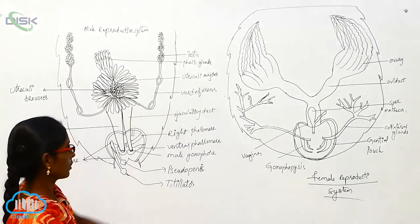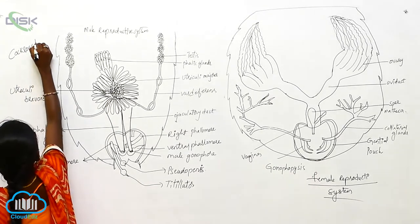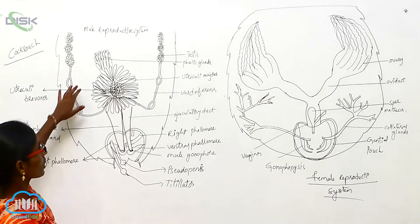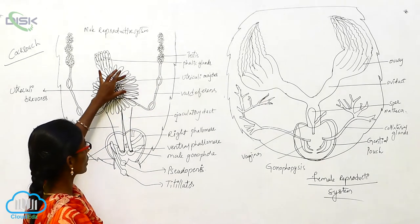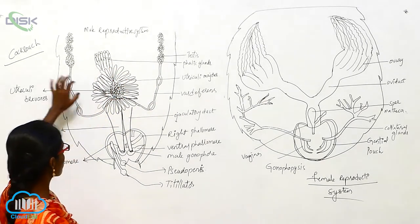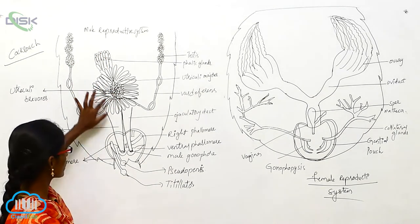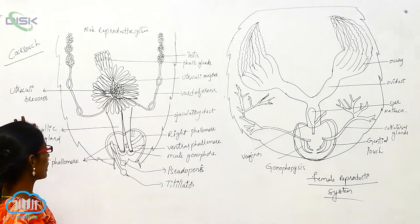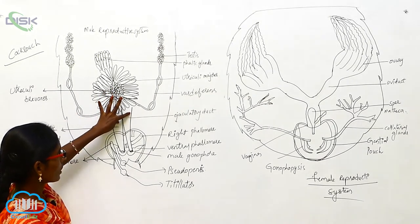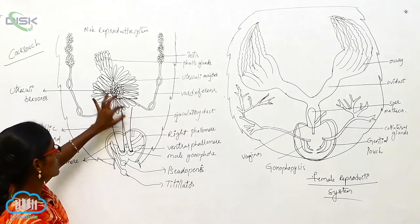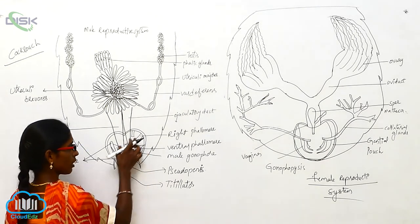In the male reproductive system of cockroach, there is a pair of testes. These have the utriculi mesores, utriculi brevores, and also consist of a phalic gland. The phalic gland extends to the posterior part by the phalic duct, and the ejaculatory duct opens into the utriculi mesores.